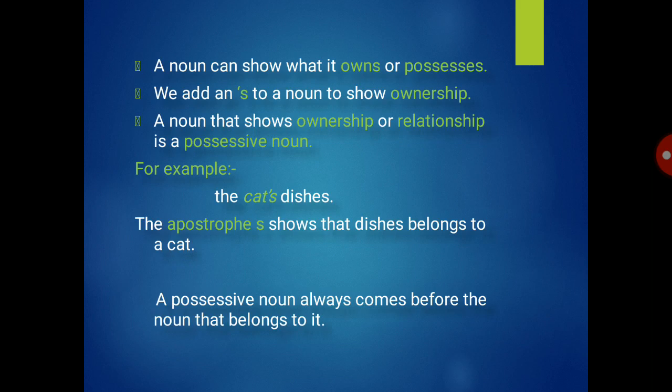A possessive noun always comes before the noun that belongs to it. For example, in 'the cat's dishes,' dishes is a noun and before that, cat's is the possessive noun. So you can understand that a possessive noun always comes just before the noun it relates to.